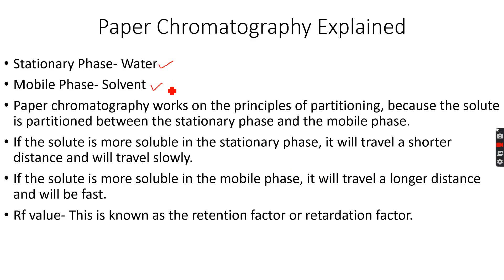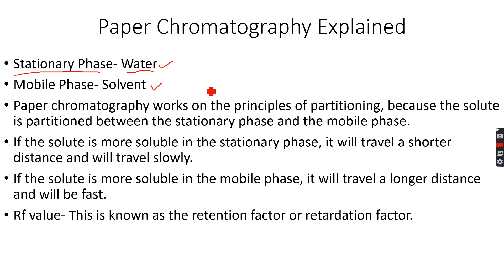They are called stationary phase and mobile phase because their action is described by their names. The chromatography paper we use has water trapped inside it, and that water is not moving — it is stationary, and therefore this is called the stationary phase. The solvent we use, for example propanone or ethanol, is rising up the paper while separating the solute mixtures, so as it is moving, it is called the mobile phase.